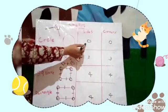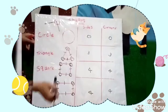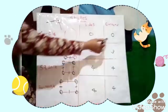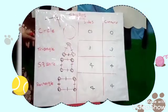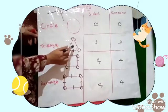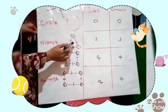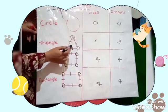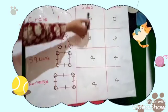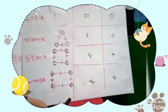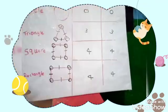The circle has zero sides. It has zero corners. What's this? It's a triangle. It has three sides. It has three corners.